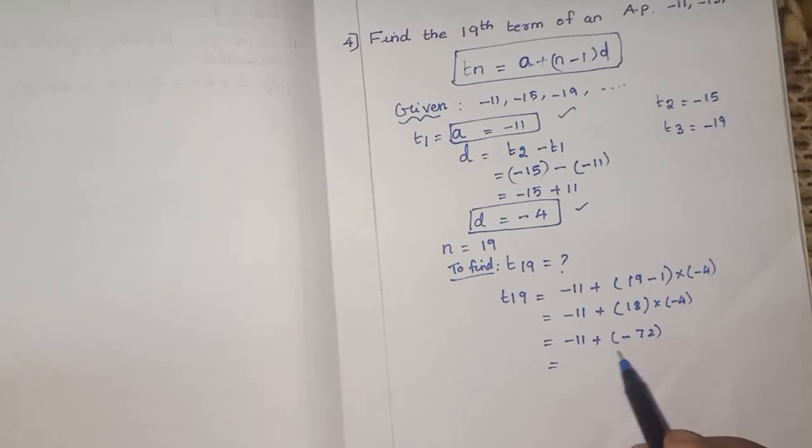So when you have two negative integers, you are going to add it means you have to add it and put the common sign. So which is the common sign here? This minus is common, in both 11 and 72. So minus, you have to add both. So 11 plus 72, 83. So 19th term will be minus 83.